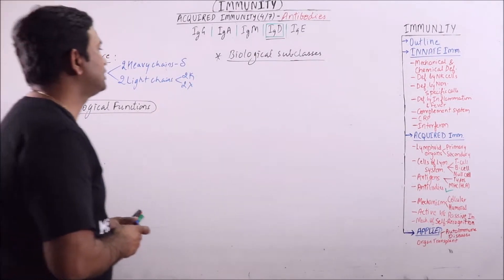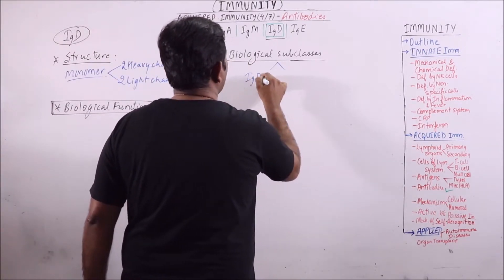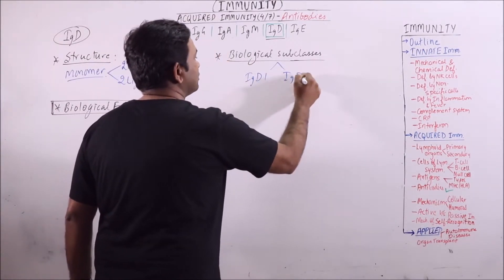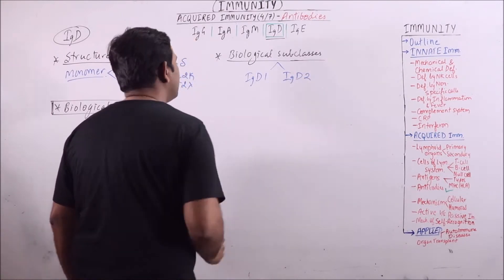The biological subclasses are 2: IgD1 and IgD2.